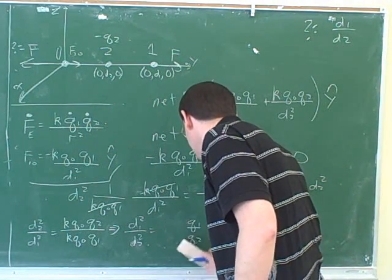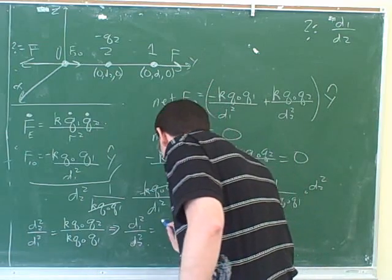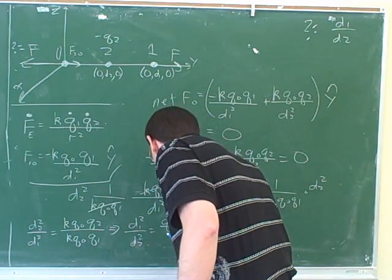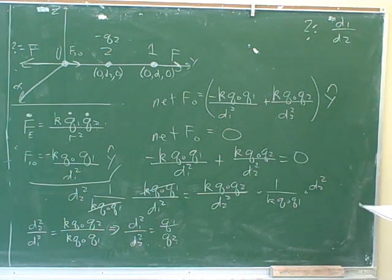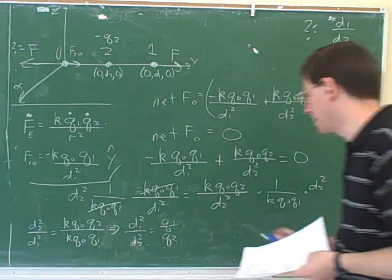The k's and the q naughts cancel. And then take the reciprocal. Right.